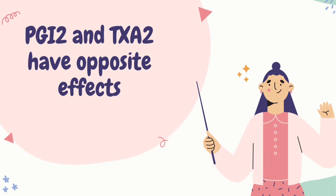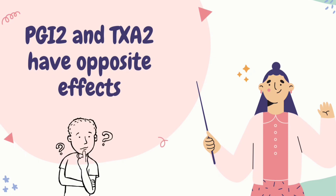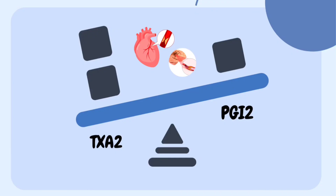Is it of any significance? The answer is yes. An imbalance between these two has been implicated in the formation of thrombus in coronary and cerebral blood vessels.